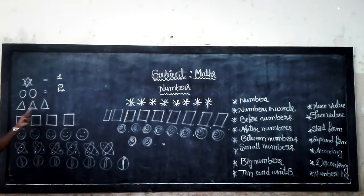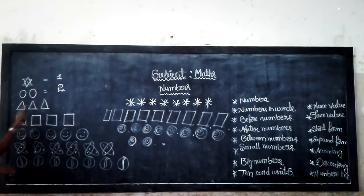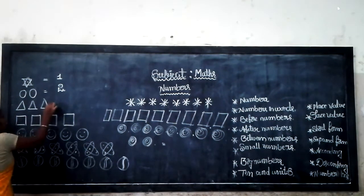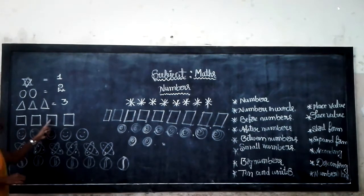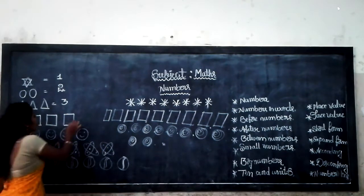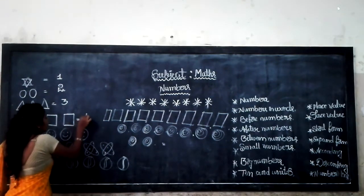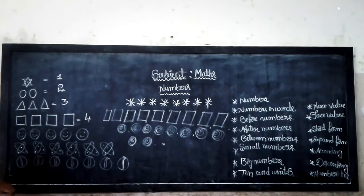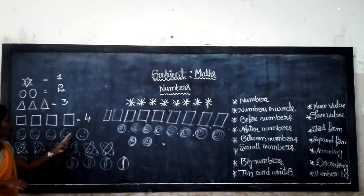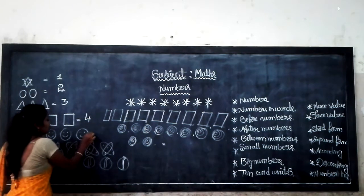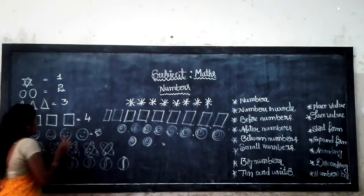Then, how many triangles are there? 1, 2, 3. Then, how many squares are there? 1, 2, 3, 4. There are 4 squares. Then, how many circles? 1, 2, 3, 4, 5. There are 5.